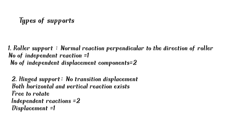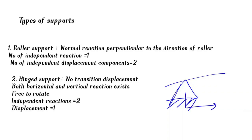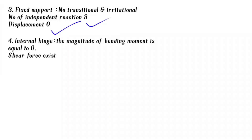Next, hinged support. A hinged support provides resistance against rotation and vertical and horizontal movements. So the number of independent reactions is 3 and displacement is equal to 0.